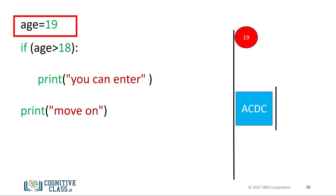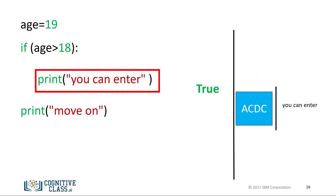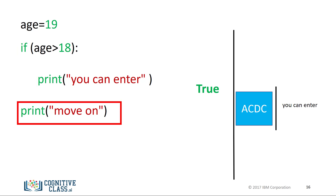For the case where the age is 19, we set the value of the variable age to 19 and check the if statement. The statement is true. Therefore, the program will execute the statement to print 'you will enter', then it will print 'move on'.